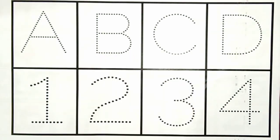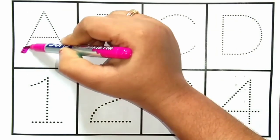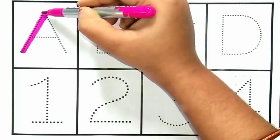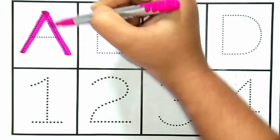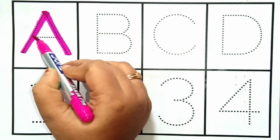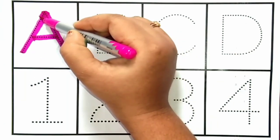Now we are going to read. A for Ant. A for Ant. A for Ant.